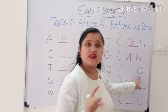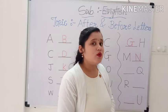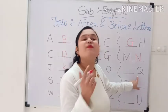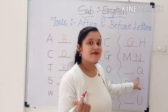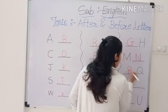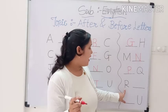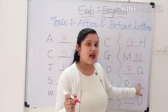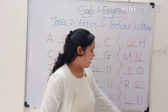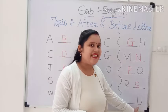Now, you tell me which letter is this? Capital Q. Very good. Which letter comes before Q? P. And which letter is this? Capital R. And which letter comes after R? S. And this is capital letter U — which letter comes before U? T. Very good.